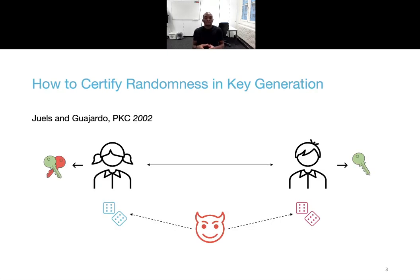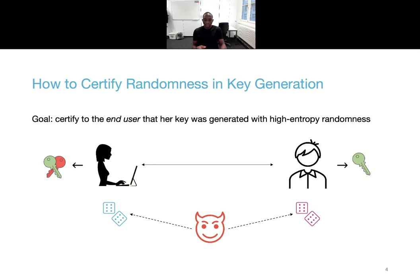Juels and Guajardo already considered at PKC 2002 this problem of randomness failure in the generation of asymmetric keys. They introduced an authority, Bob on the right, that is in charge of providing the user, Alice on the left, with extra randomness so that they can together generate keys that are close to uniform, and Bob should of course only learn the public key. The model even considered adversarial sources of randomness. Please note that the goal is here to guarantee to the end user, the human, that her keys were generated with high entropy randomness, and that her potentially flawed implementation has not weakened the key generation procedure and leaked information about her secret key, be it intentionally or not.